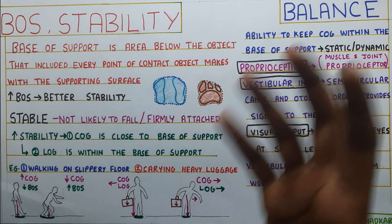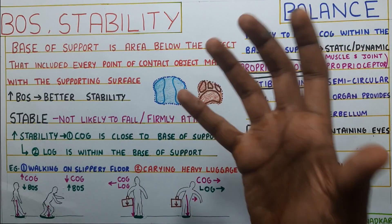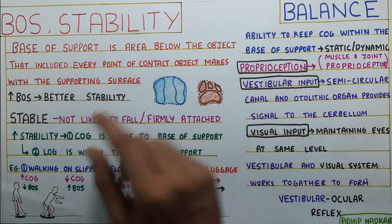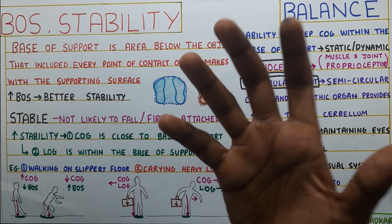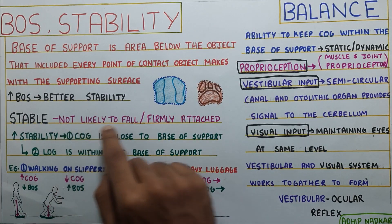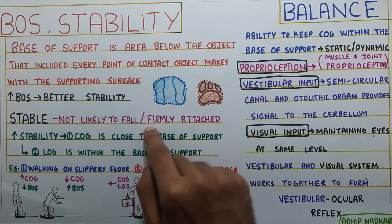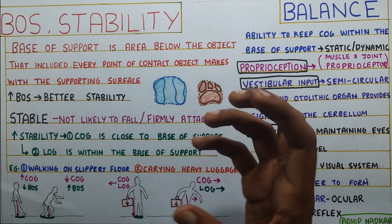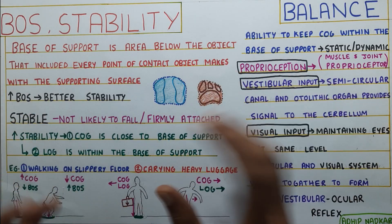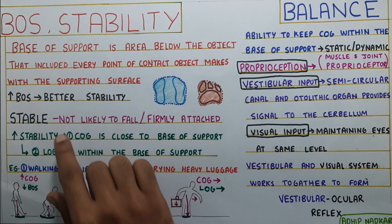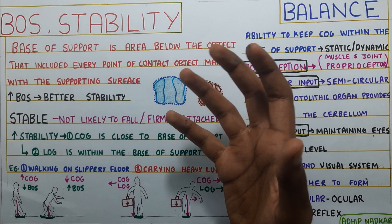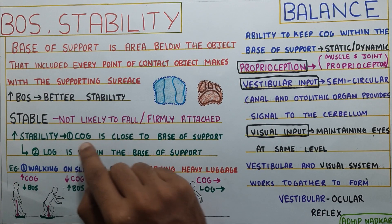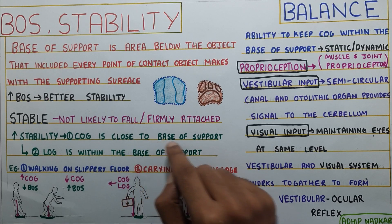Now how is this relevant in biomechanics? Before we see that, we need to understand what stability or the word stable means. The word stable basically means not likely to fall, or firmly attached. We'll come to the firmly attached part later because stability can be seen in two ways. Looking at the first one — not likely to fall — it's pretty self-explanatory. This stability increases when your center of gravity is close to the base of support.